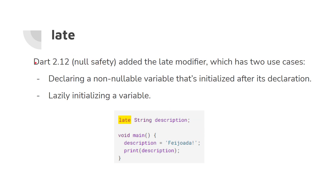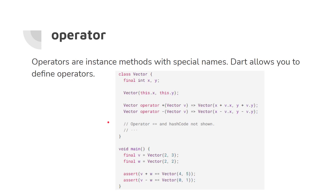'Late' was introduced in Dart 2.12 as part of null safety. It has two use cases: declaring a non-nullable variable initialized after its declaration, and lazily initializing a variable. When you have a variable and want to assign a value to it later in your code, you add the late keyword at the beginning.